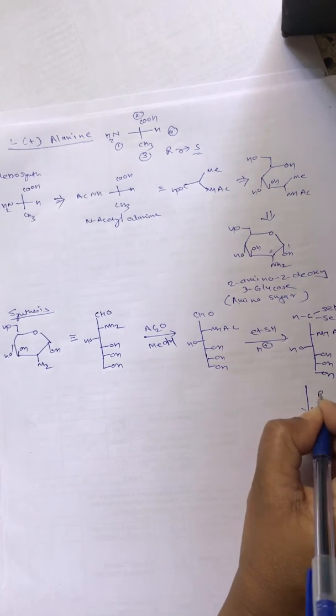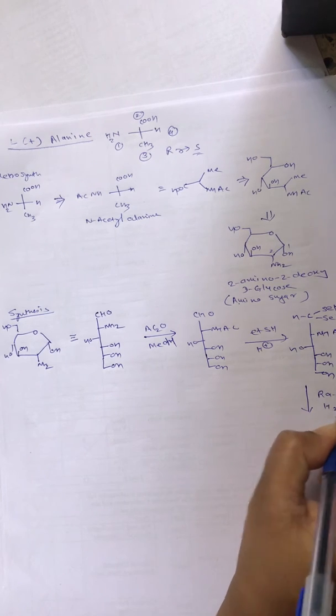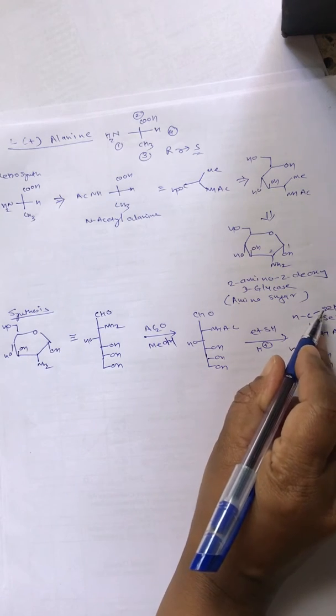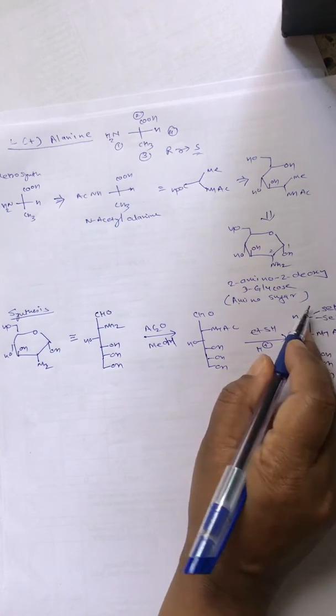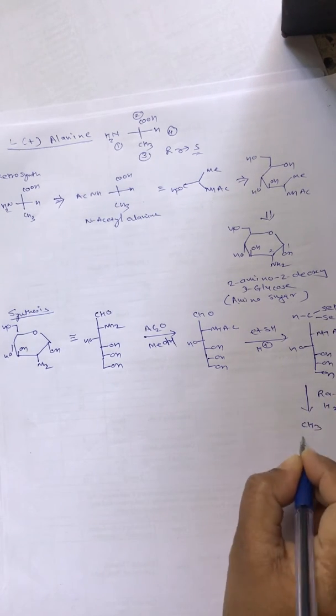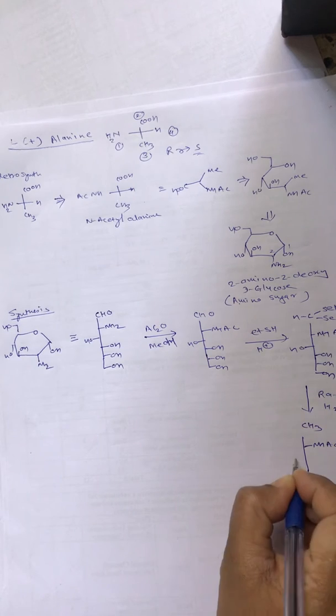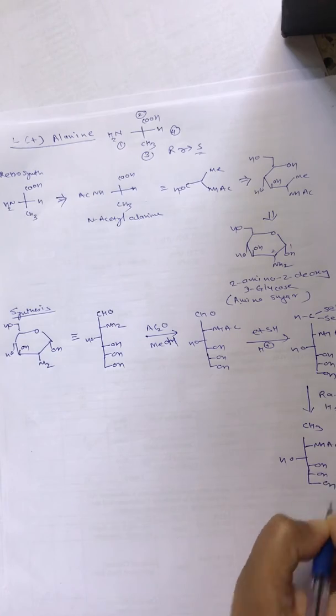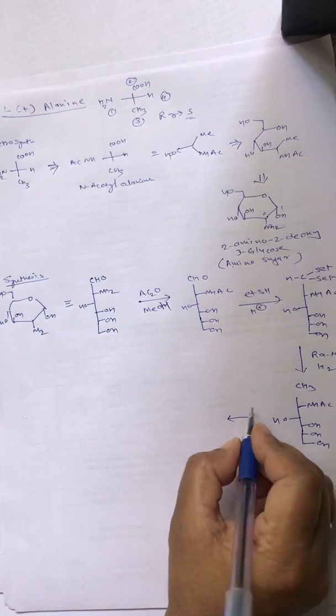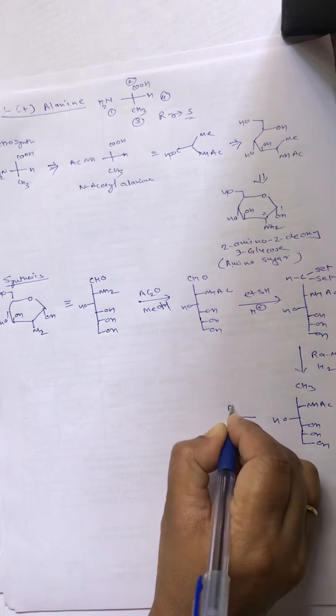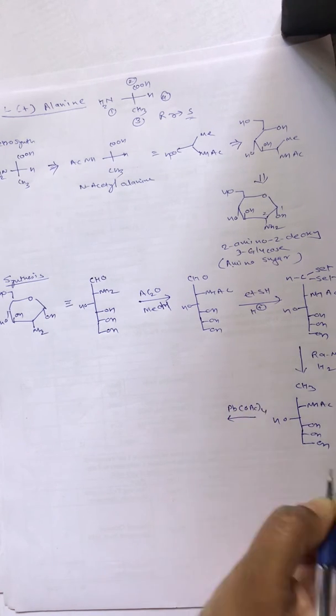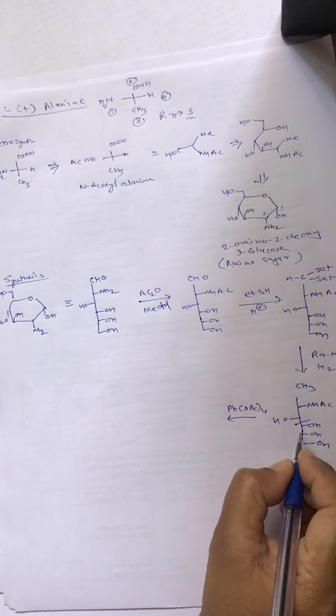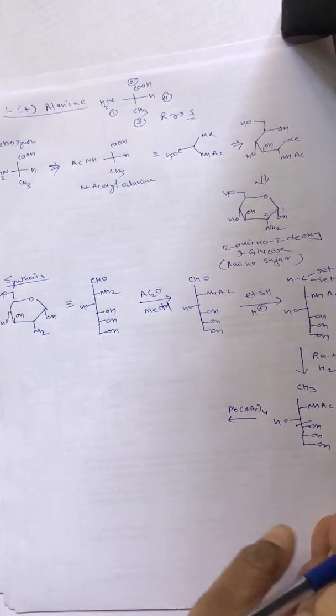This is reduced with Raney nickel in presence of hydrogen. The C-S-ET group gets replaced by hydrogen. In short, we will get CH3 there, with other groups remaining the same. Here we can use lead tetraacetate where the breaking will occur at the diols.